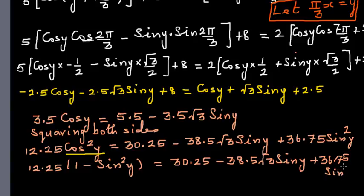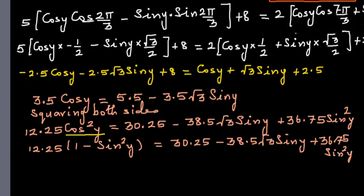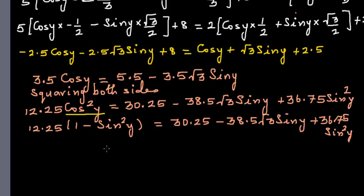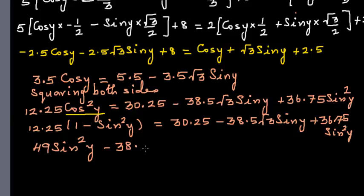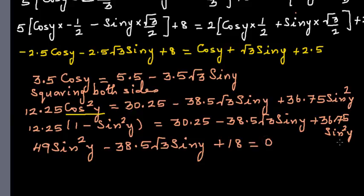Substituting cos²y = 1 − sin²y, we get 12.25·(1 − sin²y) = 30.25 − 38.5√3·sin y + 36.75·sin²y. Expanding and collecting terms, we arrive at the quadratic equation: 49·sin²y − 38.5√3·sin y + 18 = 0, where 36.75 + 12.25 = 49.